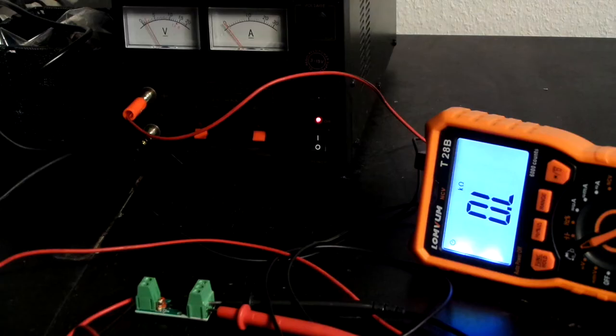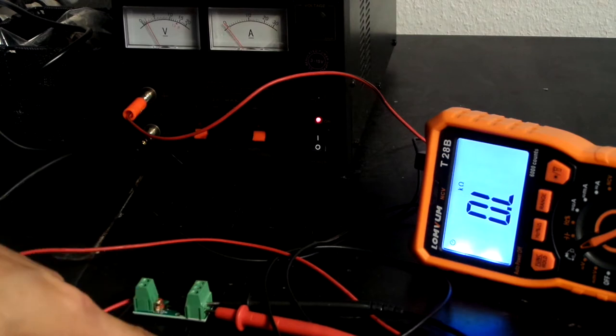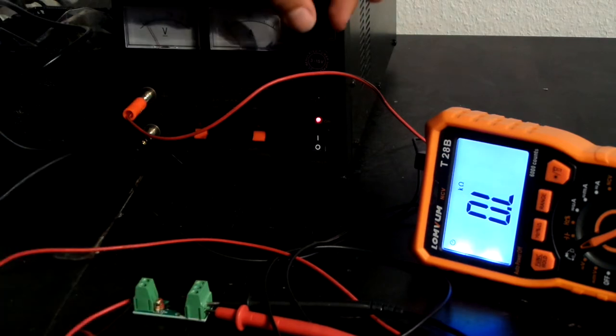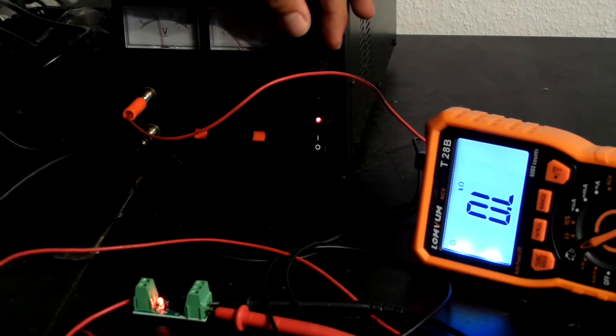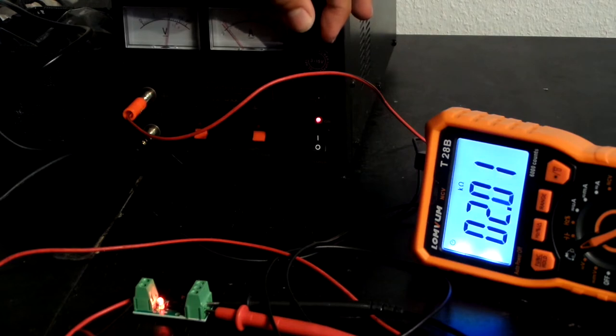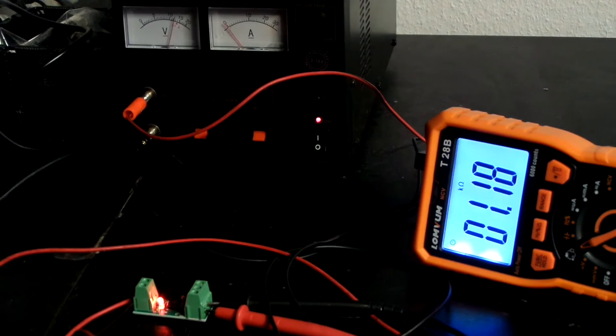Now let's see that in practice. I have power and ground connected to this side and I'm measuring resistance on this side. When I raise the voltage we see that the resistance will drop. It doesn't drop to zero but it's good enough for our application.